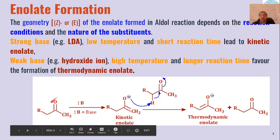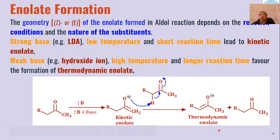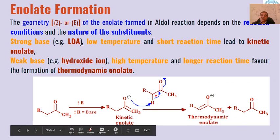For example, if we have a carbonyl compound reacted with a strong base, first we will get a kinetic enolate, and that kinetic enolate can further be transformed into the more stable thermodynamic enolate. The kinetic enolate, on reaction with another molecule of carbonyl compound, gives the aldol product.